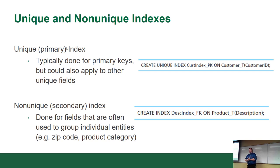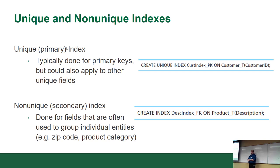There are two kinds of indexes. There's the primary index, which is unique — normally done for primary keys. However, you could also apply a unique index to other fields. For example, in a database of customers, you might not want to allow certain values to be duplicated, such as a person's SIN number, email address, or username. If you try to insert a duplicate value, the database server will return an error: 'Attempt to insert duplicate value.' Secondary indexes are for fields used to group individual entities, such as zip codes or categories.